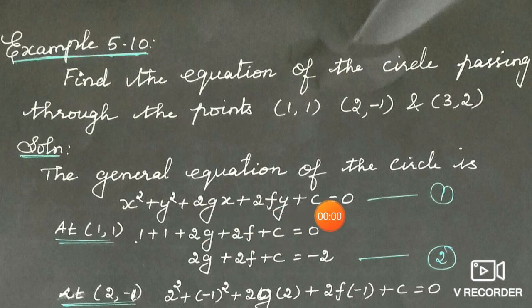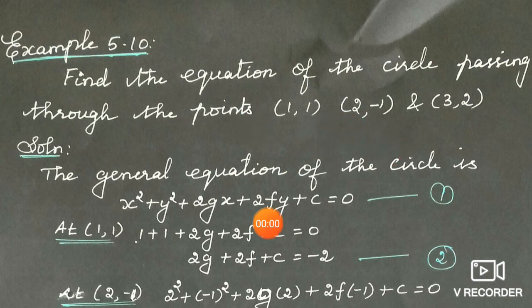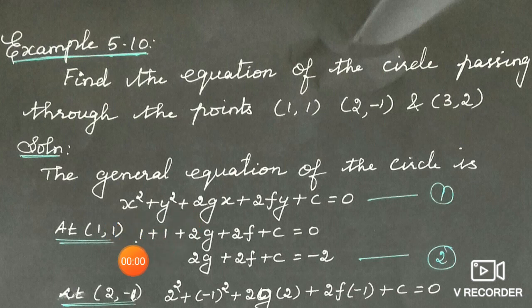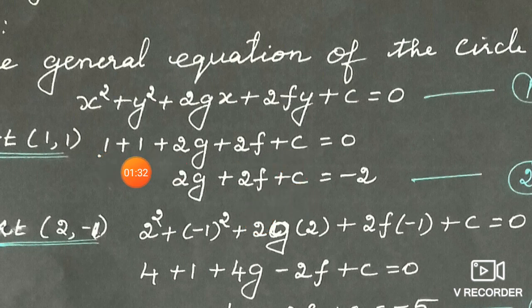We find the g, f, c values such that the circle passes through those points. The points lie on the circle, so when we substitute them into the equation it must be satisfied. So now substitute each and every point in this equation. First, substitute (1,1): x = 1, y = 1. So 1² + 1² + 2g(1) + 2f(1) + c = 0, which gives 2g + 2f + c + 2 = 0. Bringing 2 to the right hand side gives minus 2.